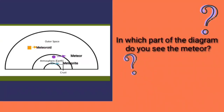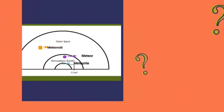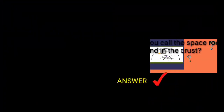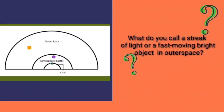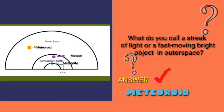In which part of the diagram do you see the meteor? If you answered atmosphere, you are excellent. What do you call the space rock found in the crust? If you answered meteorite, you are amazing. What do you call a streak of light or a fast-moving bright object in outer space? If you answered meteoroid, you are excellent.